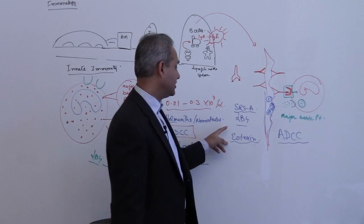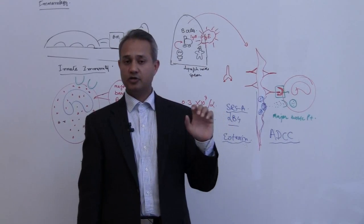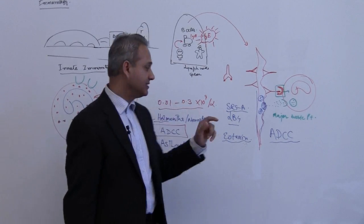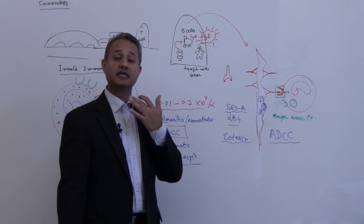As part of their allergic reaction, they are releasing eotaxin and leukotriene B4. That is causing, that is calling eosinophil in this area as well.